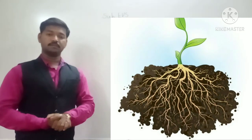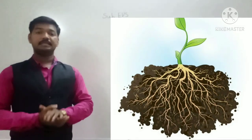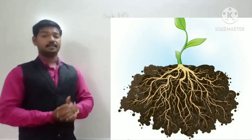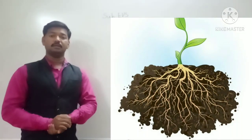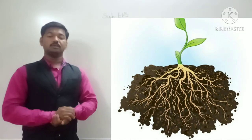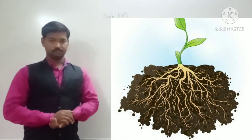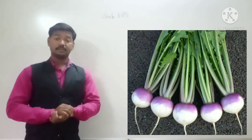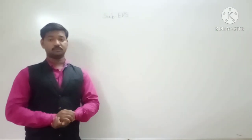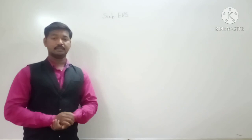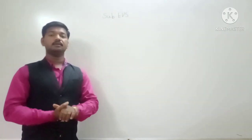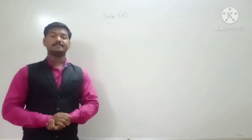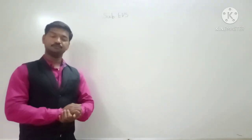Number 2: roots absorb water and minerals which are dissolved in water from the soil. This water and minerals are helpful for the plant to make their food. Roots of plants like radish, carrot, turnip, and sweet potato — they are thick, swollen, and store extra food. We eat these roots as food.